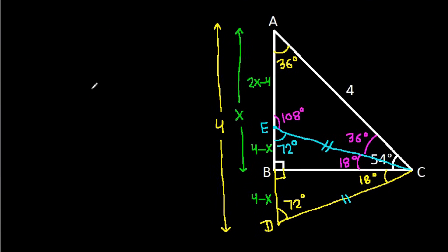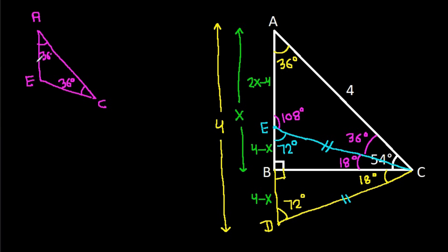In triangle AEC, these two angles are equal, that is 36 degrees. So AE will be equal to CE. And AE is 2X minus 4, so CE will be 2X minus 4. Since CD equals CE, CD will also be 2X minus 4.